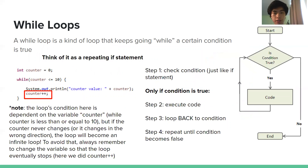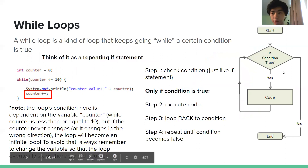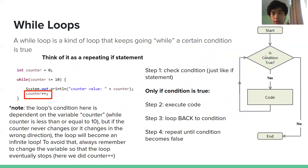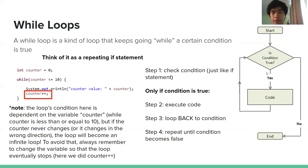So while loops: a while loop keeps going while a certain condition is true — it's in the name. Looking at the diagram, it starts, then checks if the condition is true. The condition is the same format as an if statement — for example, counter less than or equal to 10. If it's true, it executes the code, and then jumps straight back up to check the condition again. It keeps looping until the condition ends up false, at which point the loop stops.